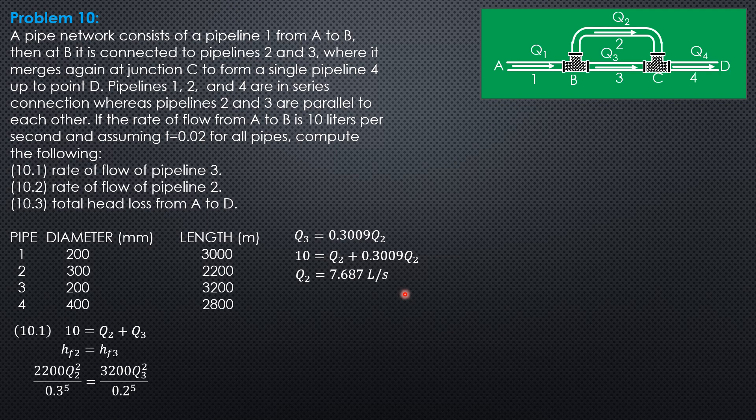And therefore, Q3 can now be solved 0.3009 of 7.687. So, Q3, the first question in this problem, 2.313 liters per second.